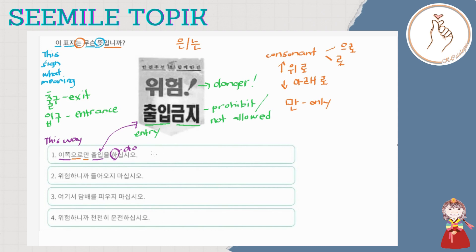Hindi. So X yung number one. Number two: WIHOM HANIKA DUROUJI MASHIPSHIO. Si WIHOM HADA, it means again — danger, mapanganib. WIHOM HADA. And then DUROUDA — from the word DUROUDA, it means 'to come in.'